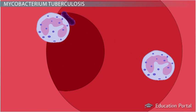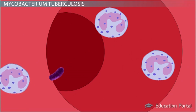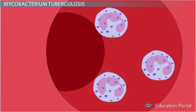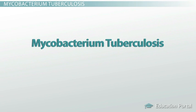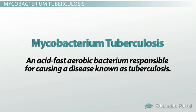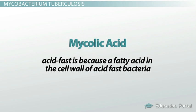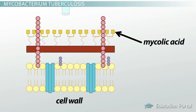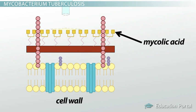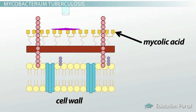One type of bacterium your body tries to entomb is called Mycobacterium tuberculosis. This is an acid-fast aerobic bacterium responsible for causing a disease known as tuberculosis. The reason this bacterium is called acid-fast is because a fatty acid in the cell wall of acid-fast bacteria, known as mycolic acid, gives these cells the ability to resist decolorization with acid alcohol in certain staining procedures used to identify this bacterium. In addition, this mycolic acid also makes these bacteria impermeable to a lot of stains, such as those used in the gram stain.